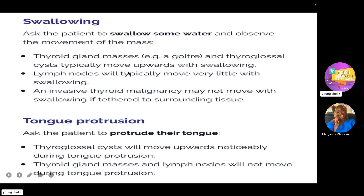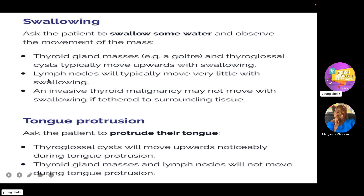When talking about how to differentiate thyroid masses: normally your goiter and your thyroglossal cysts both move with swallowing. However, just for the thyroglossal cysts, they would also move with tongue protrusion. Your goiter and other masses would not move with tongue protrusion.